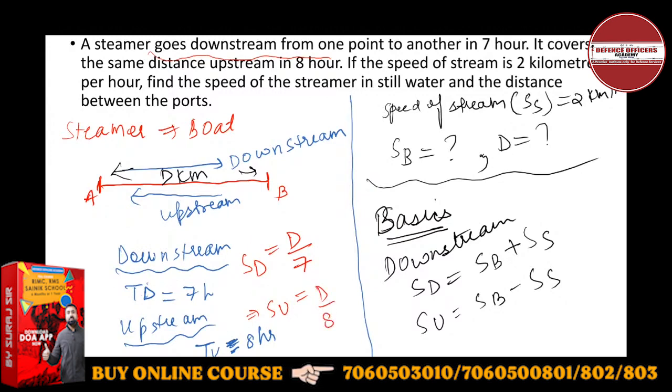We are going to use the formula for speed of stream. If I subtract these two equations, SD minus SU equals SB plus SS minus SB minus SS. So SS will be SD minus SU upon 2.